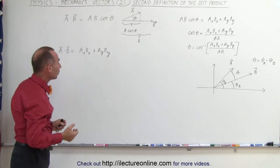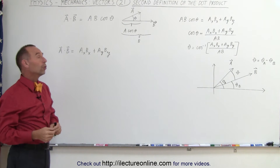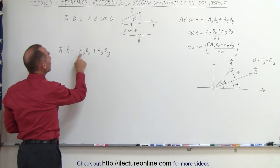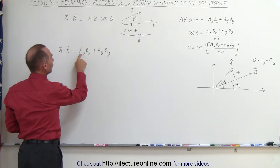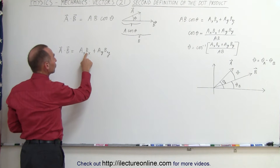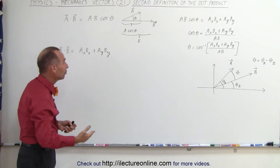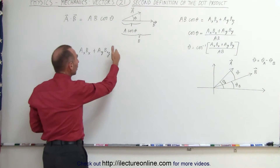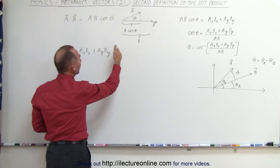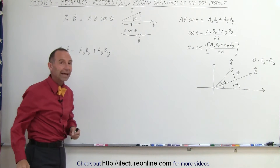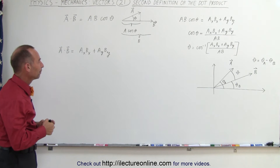But we also know — or at least we should know — that A dot B is equal to the component in the x direction of A times the component in the x direction of B, plus the y component of A times the y component of B, and if we do it in three dimensions, we get plus A sub Z times B sub Z, the z components of A and B multiplied together.